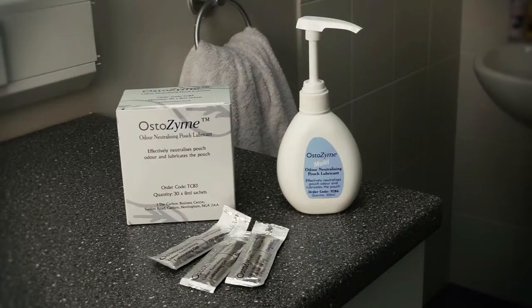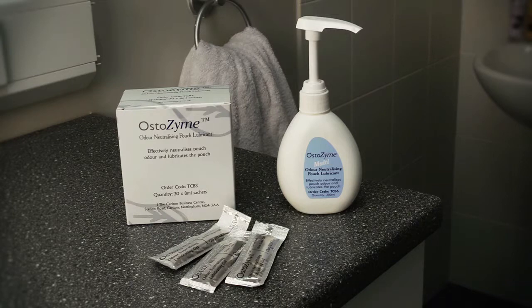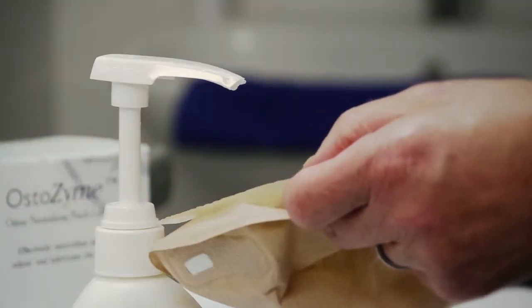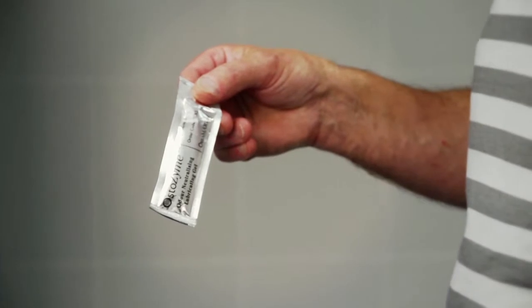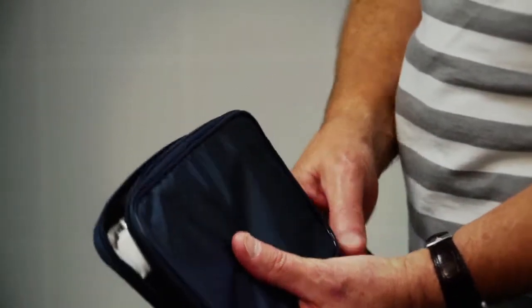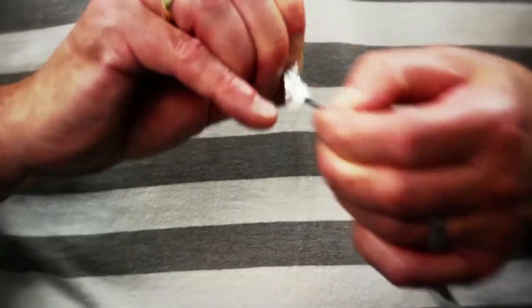Osterzyme is available as either a 300ml pump bottle or as 8ml sachets. The pump bottle is easy to operate, downward pressure is all that is needed. Each 8ml sachet dispenses the ideal amount and makes it easy to carry when out or away from home. The tear strip reveals a narrow spout for ease of use.